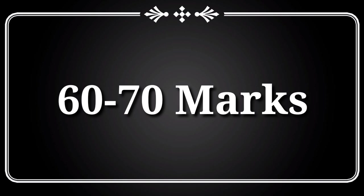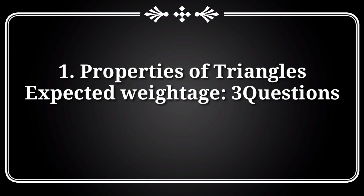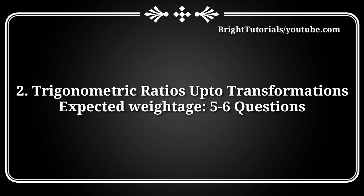For scoring 60 to 70 marks in MSAT mathematics from Maths 1A, you should start with the chapter Properties of Triangle, because it covers a minimum of 3 questions in MSAT 2021. The important topics from this chapter are the sine rule, circumradius, inradius, and area of triangle. All common questions related to these topics are very important in this unit, so you should focus more on them.